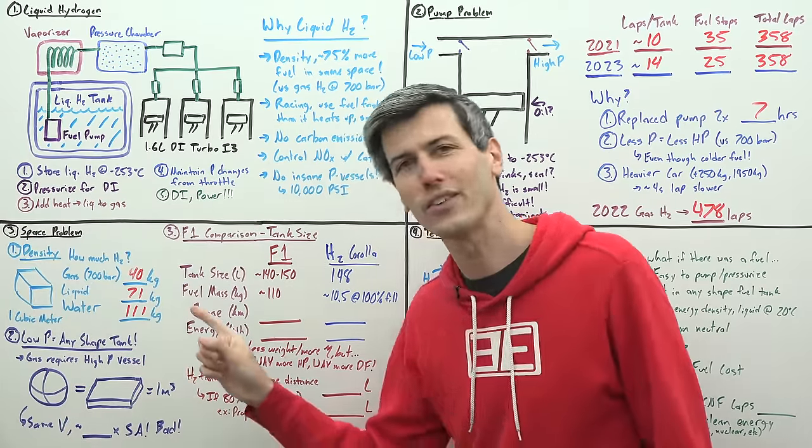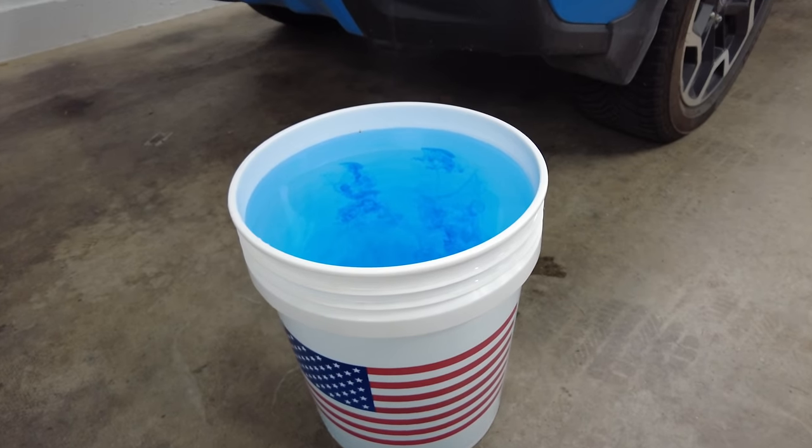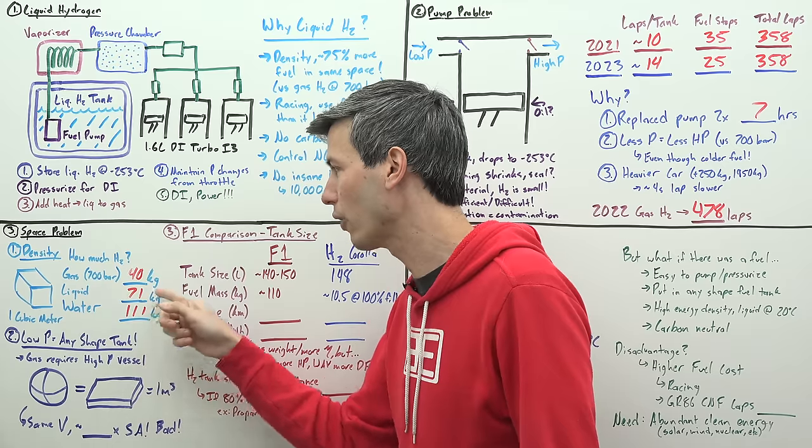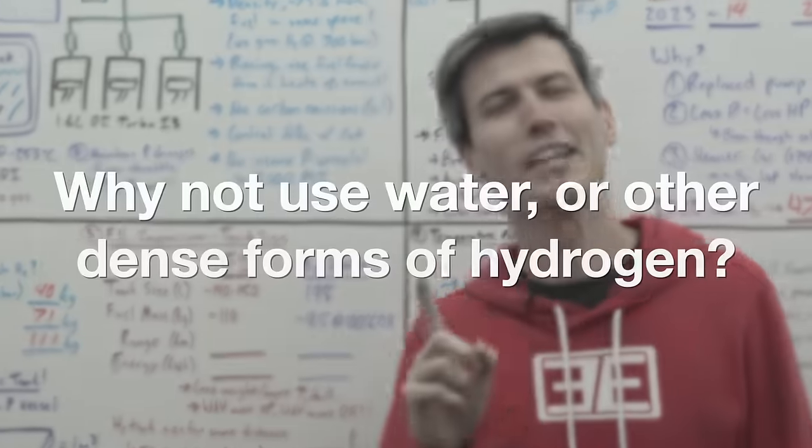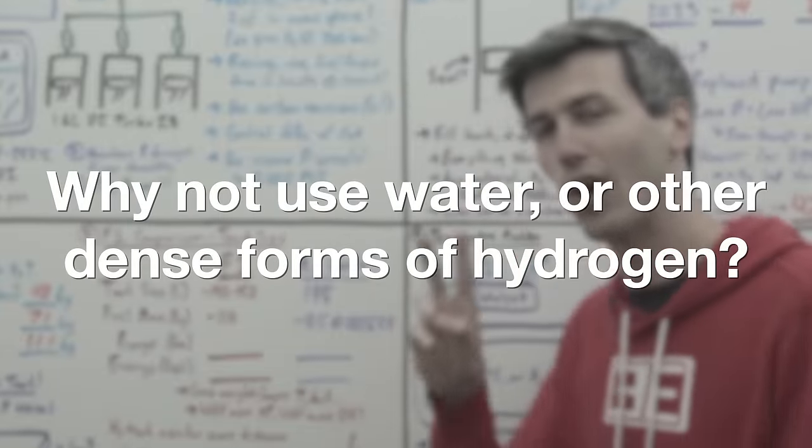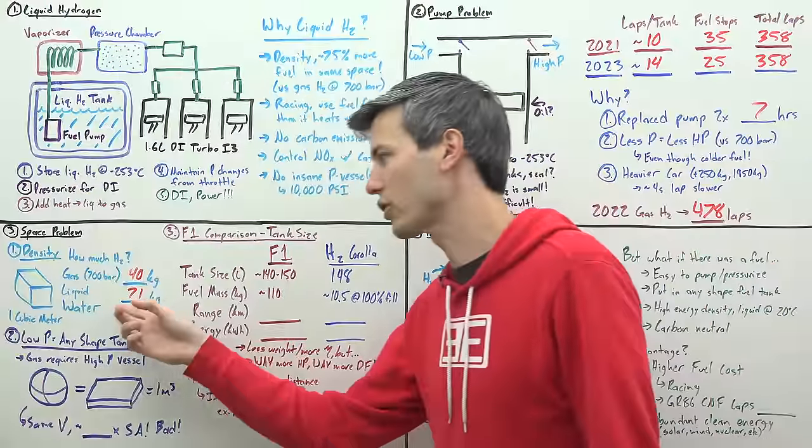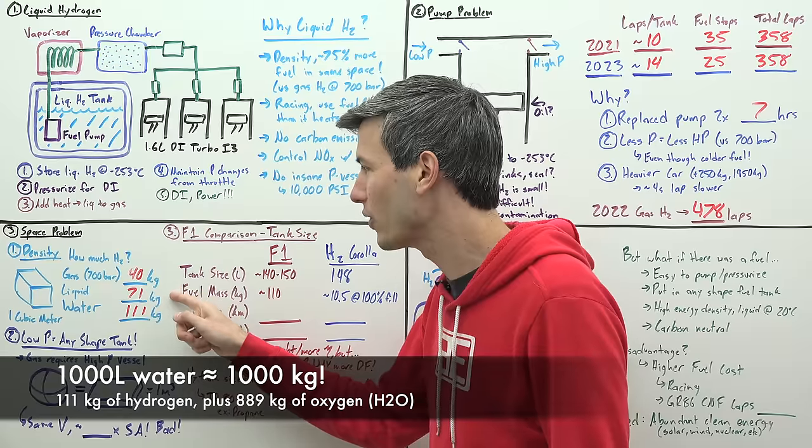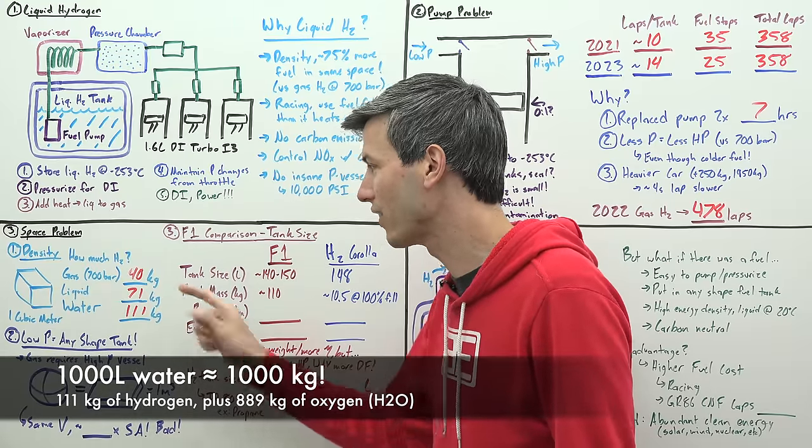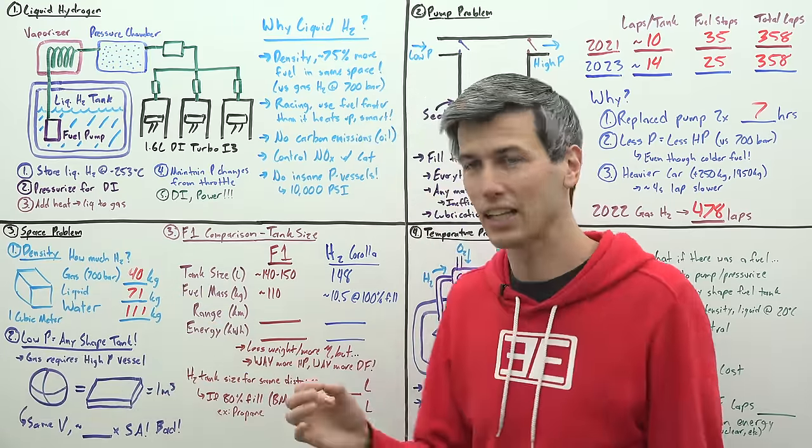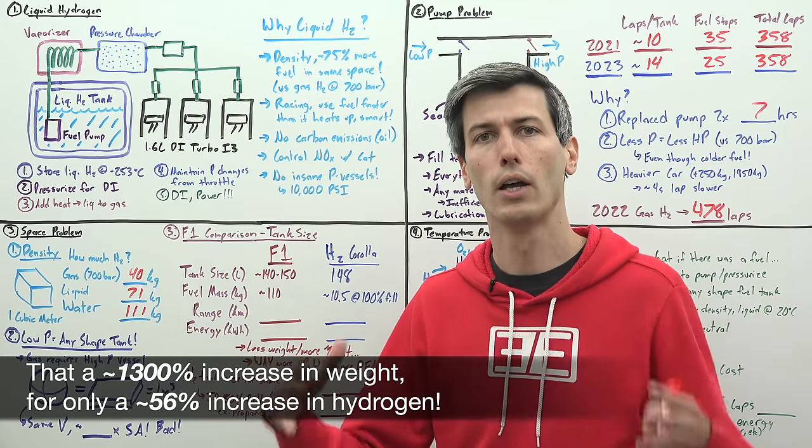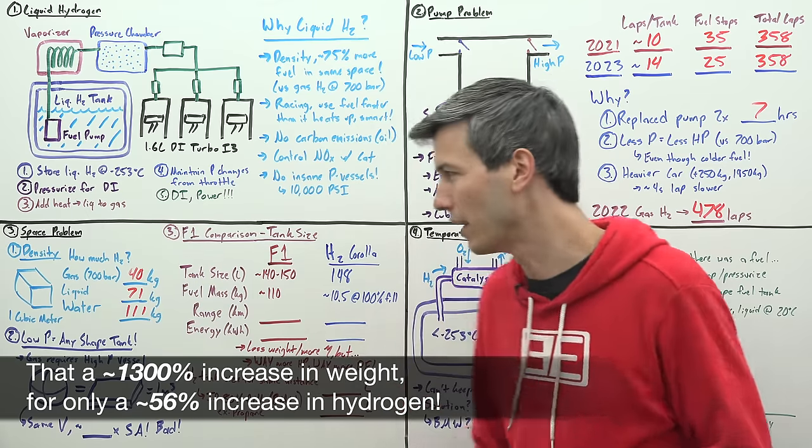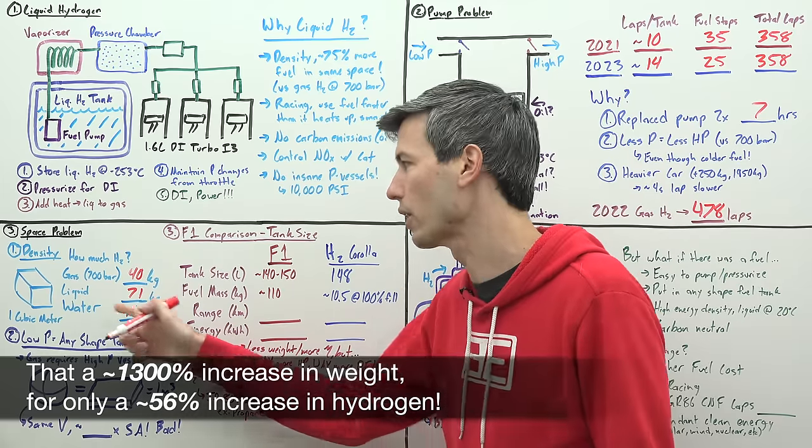But what anyone that tells you this is leaving out are two critical points. First, how much does water weigh? About a thousand kilograms in one cubic meter. So we're taking our weight from 71 kilograms to a thousand kilograms, an extraordinary amount of more weight just for a bit of an increase in hydrogen. That's problem number one.